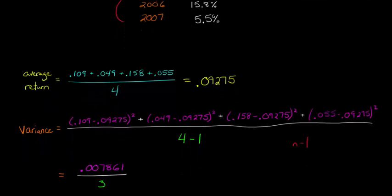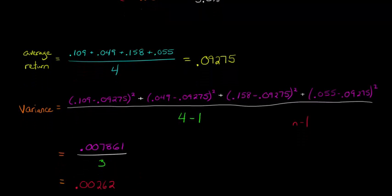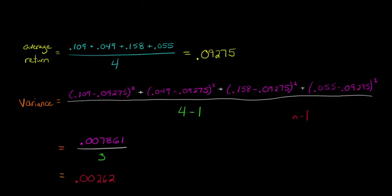So now I'm just going to do the algebra, but ultimately we end up with this fraction here, .007861, and then we divide that by 3, of course, because that's 4 minus 1, and that gives us .00262 as our variance.